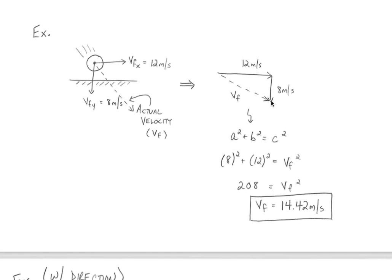So despite the fact that this object is moving 12 meters per second to the right while at the same time moving 8 meters per second down at that final moment, realistically when I combine those two, what I observe is an object moving at 14.42 meters per second in a combined direction somewhere in between the x and y directions.